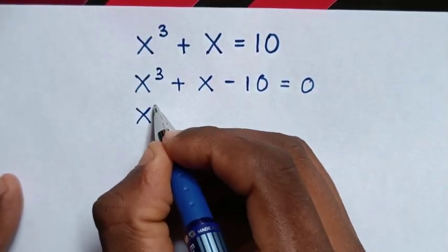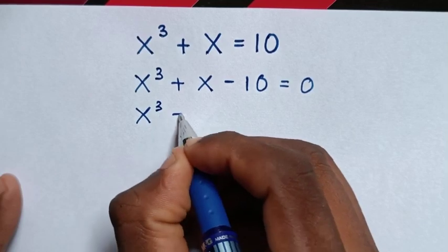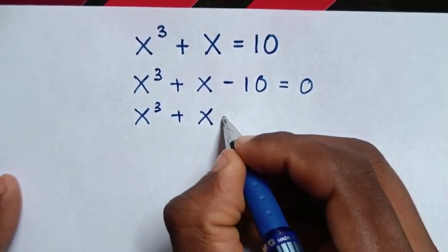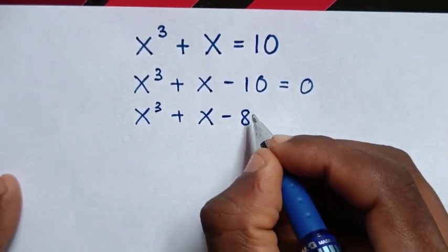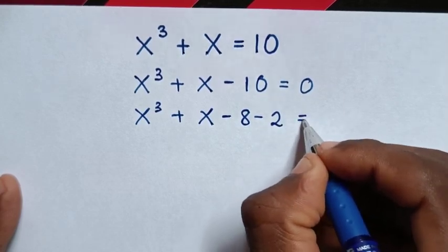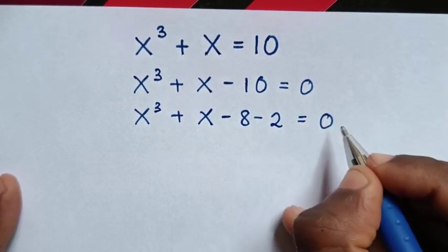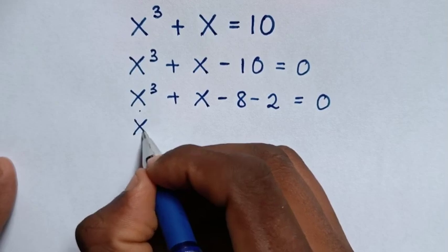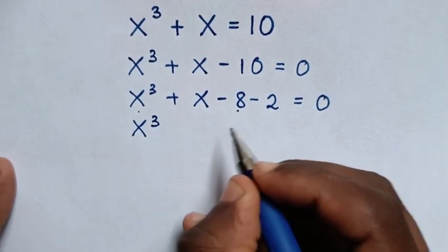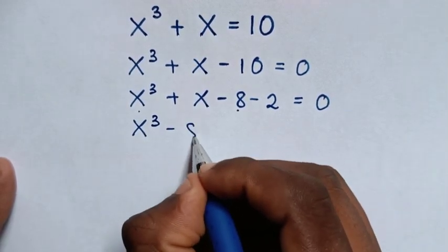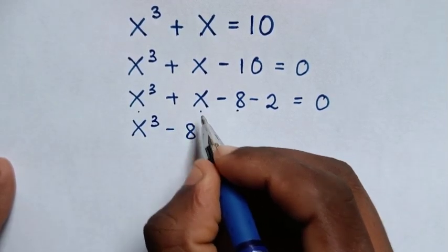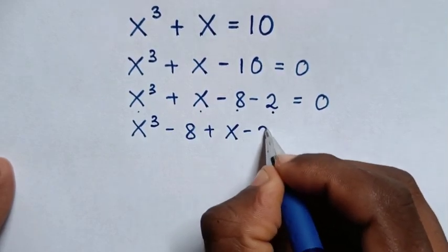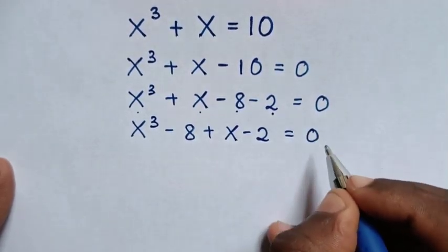Then it will be x power 3 plus x, and negative 10 is the same as negative 8 minus 2, is equal to 0. Then it will be x power 3 minus 8, then plus x minus 2 is equal to 0.